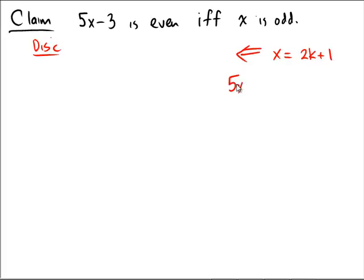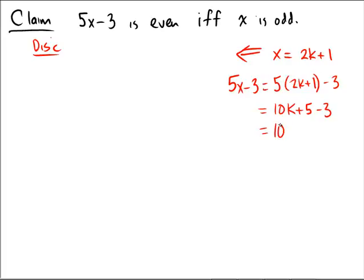Then, what is 5x minus 3? It would be equal to 5 times 2k plus 1, because that's what x is, minus 3. That's 10k plus 5 minus 3. That's equal to 10k plus 2. And notice that there is a 2 that will factor out of there. So, we get 2 times an integer, which means that this is definitely even. So, 5x minus 3 is even.